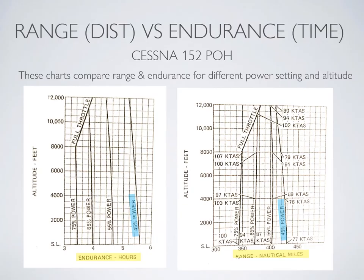Grab a POH and look at the range and endurance profiles of a Cessna 152. You have endurance expressed in hours and range expressed in nautical miles. Taking the line furthest out, you can see that in both cases 45% power is going to give both the best range and the best endurance. As we increase power to 55, 65, and 75%, both your range and endurance for a given tank of fuel will decrease.